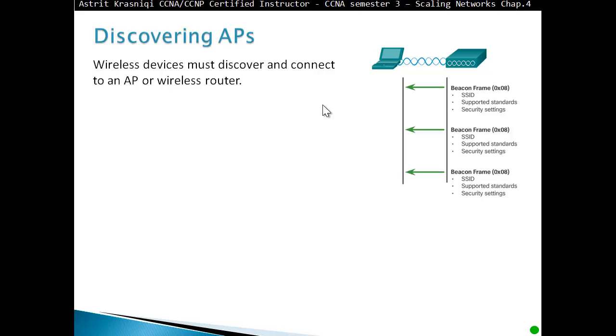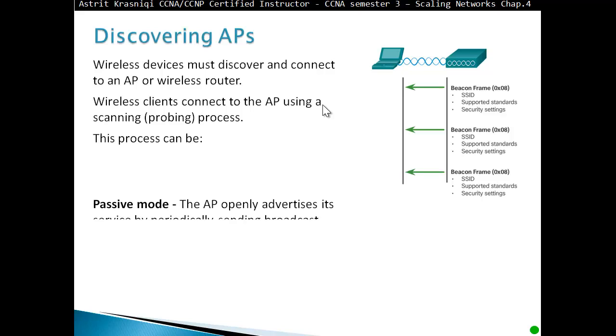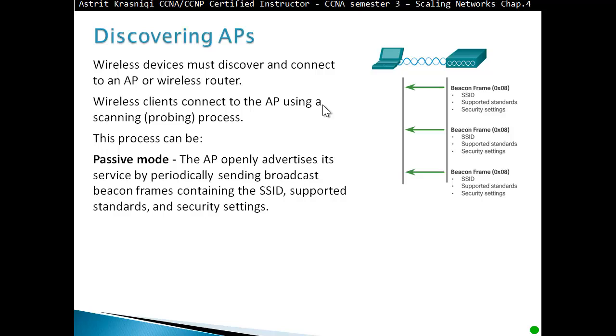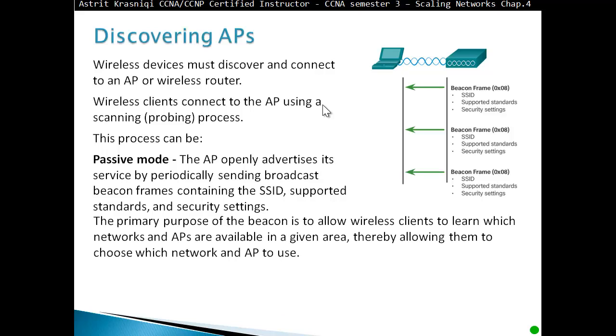Discovering access points: wireless devices must discover and connect to an access point or wireless router. Wireless clients connect to an access point using scanning or probing process. This process can be passive mode - the access point openly advertises its service by periodically sending broadcast beacon frames containing the SSID, supported standards and security settings. For example, as you walk in, your access point will automatically advertise to your device what is the SSID, what standards they support and what security settings they are using. The primary purpose of the beacon is to allow wireless clients to learn which networks and access points are available in a given area, thereby allowing them to choose which network and access point to use.